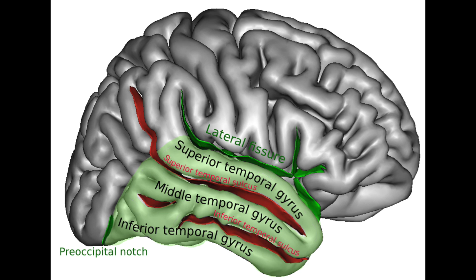The medial temporal gyrus is important for judging distance, face recognition, audio-visual emotion recognition, and accessing word meaning while reading. The inferior temporal gyrus is one of the higher levels of the ventral stream of visual processing, so it's associated with representation of objects, places, faces, and colors, and may be involved in face perception and recognition of numbers and words.